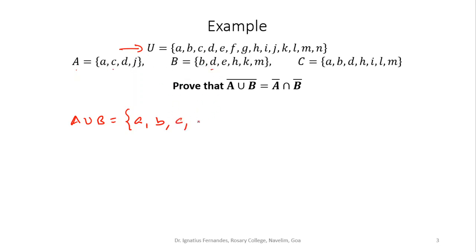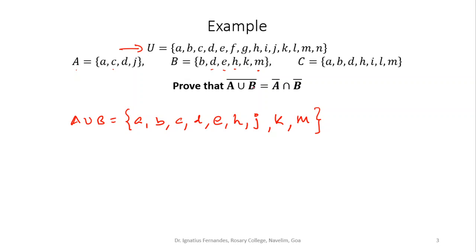A union B combines A and B together — all elements which are either in A or B. Going in order through the alphabets: A, B, C, D, E, H, J, K, M are the elements in A union B. I am writing the elements in order to easily check and avoid missing any alphabet.